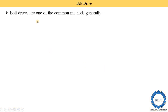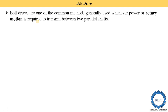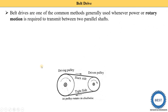Belt drives are one of the common methods generally used whenever power or rotary motion is required to transmit between two parallel shafts. As you can see in the diagram, this is the driving shaft and this is the driven shaft. Both shafts are parallel to each other, so whenever we require to transmit power between two parallel shafts, we can use the belt drive.